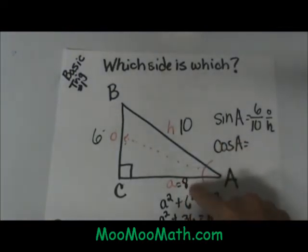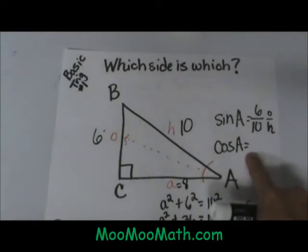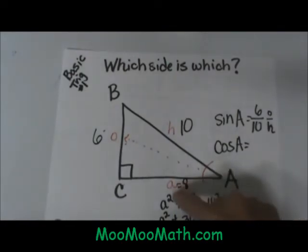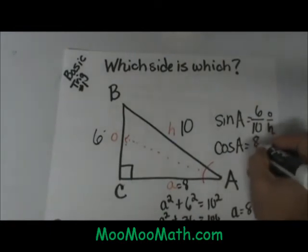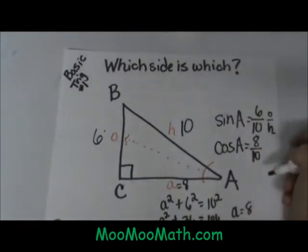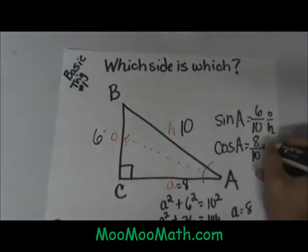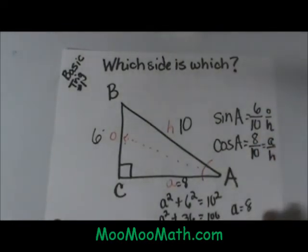So now I can set up my ratio of cosine. Cosine of A will be 8 over 10. So I set up adjacent which is 8 over hypotenuse which is 10. So it is 8 over 10, and that is how I would solve.